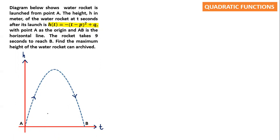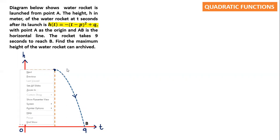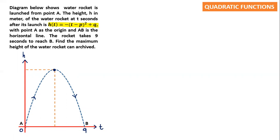The rocket takes nine seconds to reach B. So origin is zero and B is at nine seconds. You should know that a quadratic graph like this will have a line of symmetry — symmetry is supposed to be in the middle. This point is an important point; it's the maximum point. Since it's symmetric, the value between zero and nine is 4.5. So the symmetry is at 4.5.